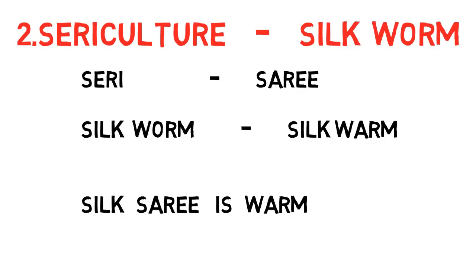Learn by heart these two sentences so that you can easily remember the two branches of agriculture without any confusion. First sentence: 'Earth is very warm.' Second sentence: 'Silk sari is warm.'